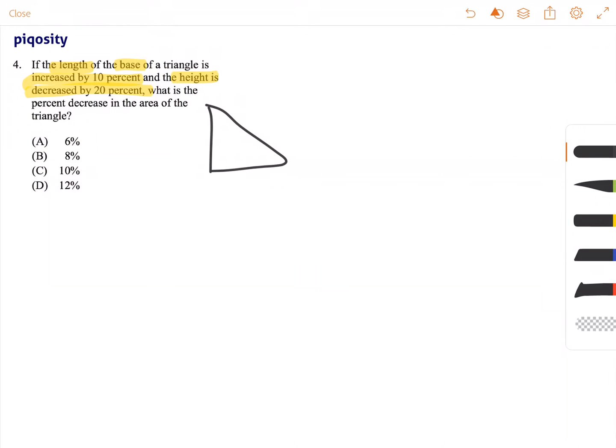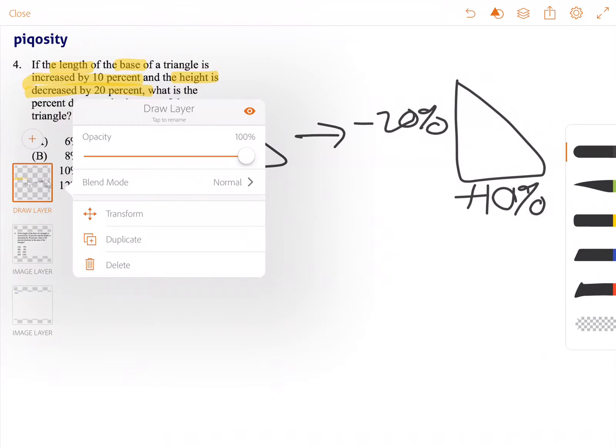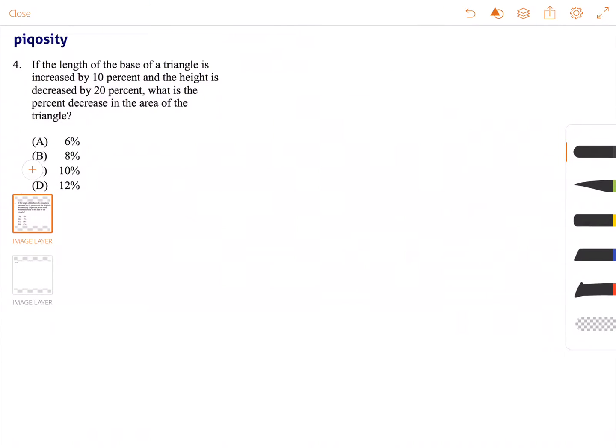So we are changing the dimensions of a triangle by decreasing the height by 20% and increasing the base by 10%. Now you may be wondering, how are you supposed to do this without any measurements in the problem? Well the nice thing is with percentages, it doesn't matter which values you use, as long as you always get the same answer regardless of which measurements you actually use.